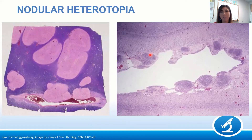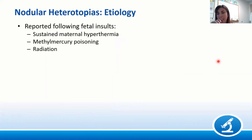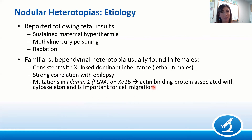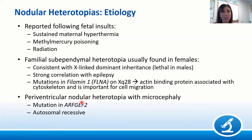Etiologies of nodular heterotopias include maternal hyperthermia, methylmercury poisoning, and radiation. Familial forms include familial subependymal heterotopia — predominantly in females, thought lethal in males — with X-linked dominant inheritance, a strong association with epilepsy, and due to mutations in filamin A, an actin-binding protein important for cell migration. There is also periventricular nodular heterotopia with microcephaly due to mutations in ARFGEF2, with autosomal recessive inheritance.